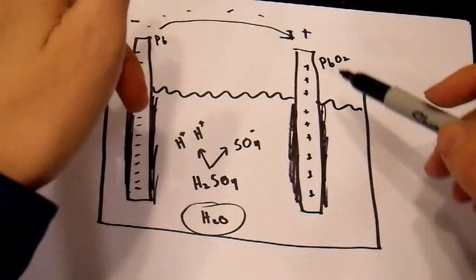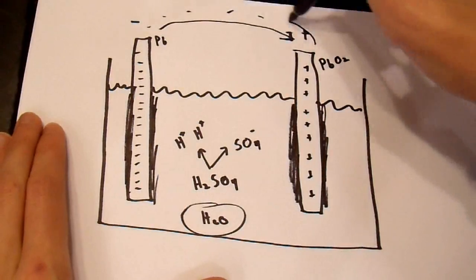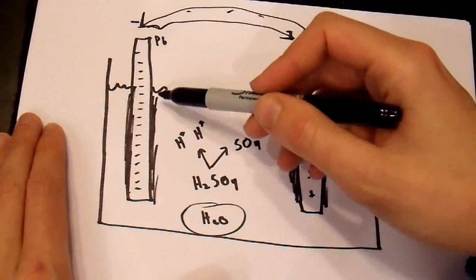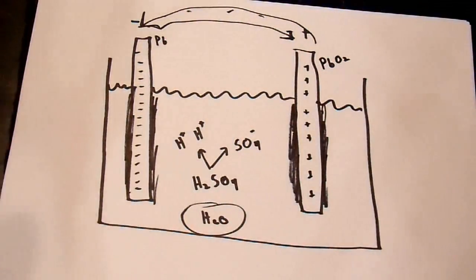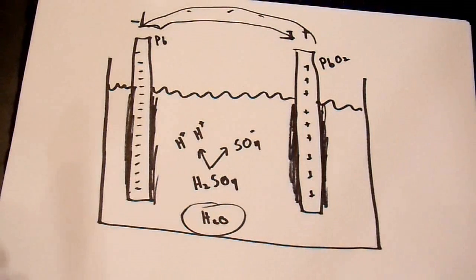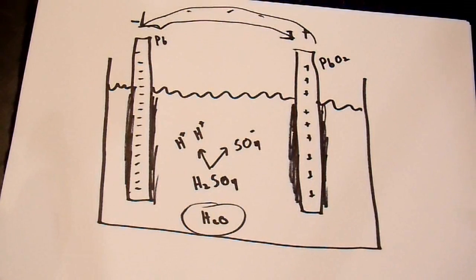And, when you recharge this, you shove the current in the opposite direction. The electrons flow this way. And, these reactions get reversed. The sulfate breaks up. It goes back into acid in your battery. And, your battery is recharged. So, this is the very basics of how a battery works.